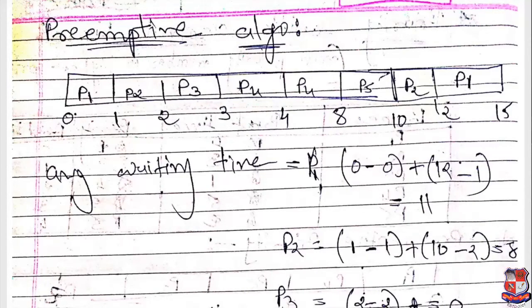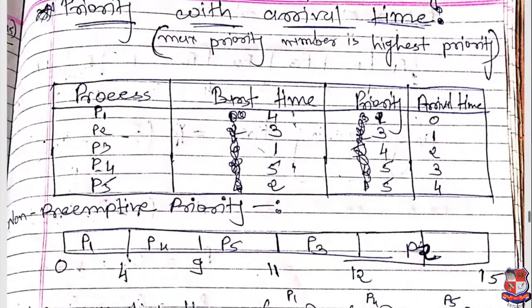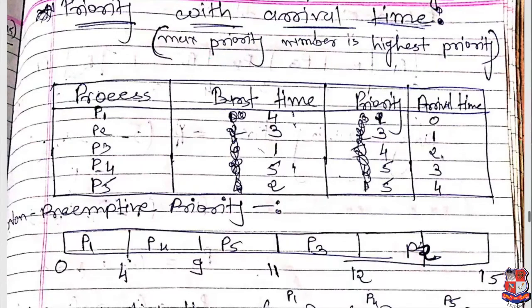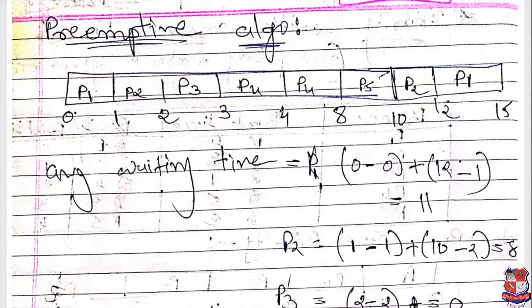At time 3, we check processes with arrival time 3 or less. P3 has completed execution. The available processes are P1, P2, and P4. The highest priority number among them belongs to P4. P4's burst time is 5, but we consider only one second. So P4 executes from 3 to 4, with remaining burst time of P4 becoming 4.